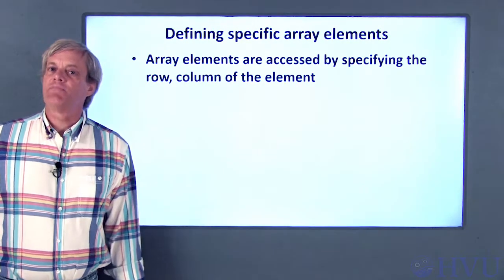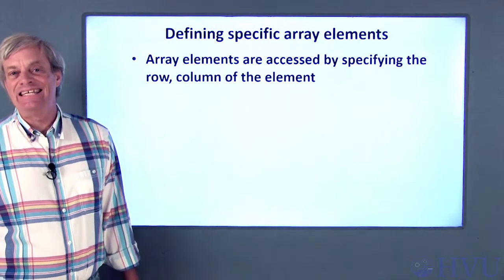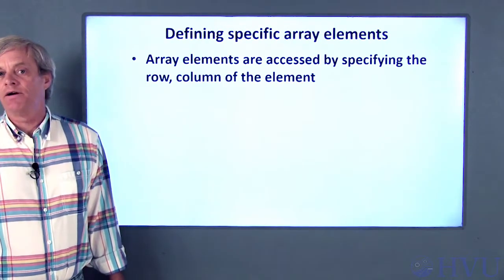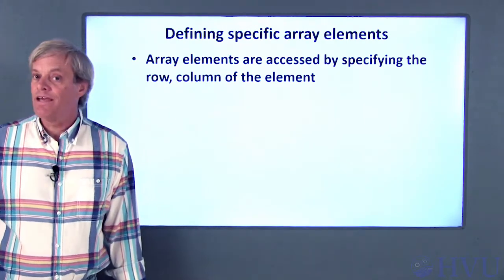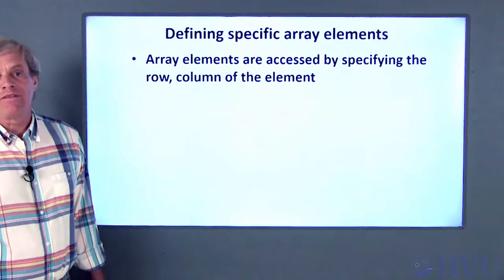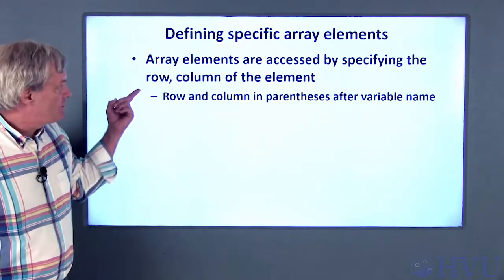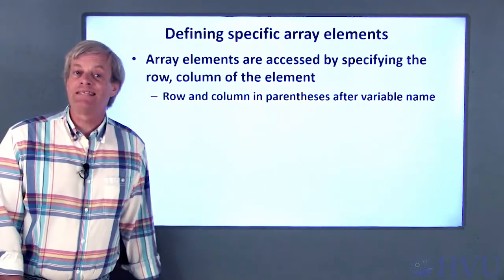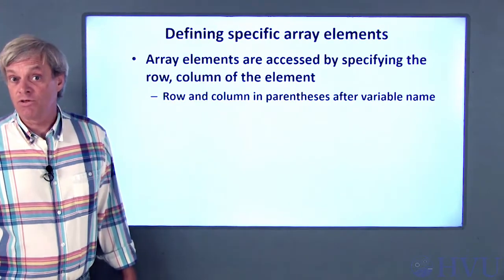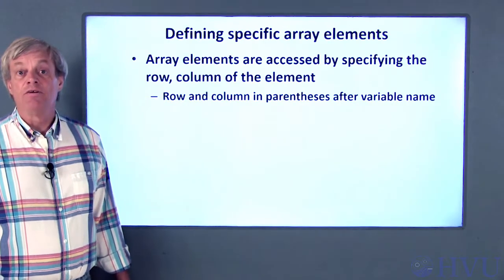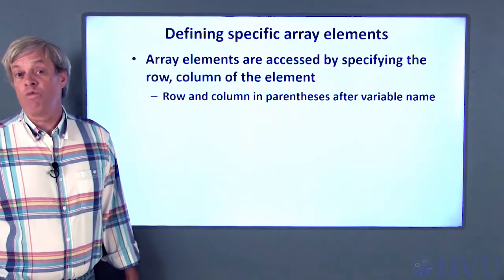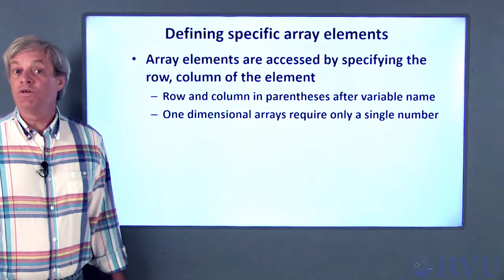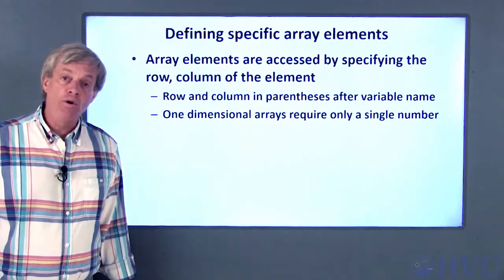You can also define specific elements of an array by referencing the element by its indices. In typical mathematical notation, elements are specified by row and column numbers in that order. In MATLAB, the row and column numbers are placed in parentheses after the array name, separated by a comma, instead of using subscripts. Numbering of rows and columns always starts with one. Elements of one-dimensional arrays can be addressed by a single number — use the row number if the array has a single column, or the column number if it has a single row.